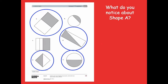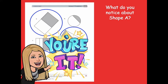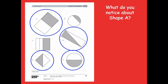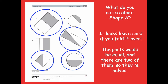What do you notice about shape A? Pause the video and think about an attribute or observation. It looks like a card if you fold it over — the parts would be equal, and there are two of them, so they're halves. The shapes need to be the same size, so if you fold one side of the rectangle on top of the other and they match, then they must be halves.